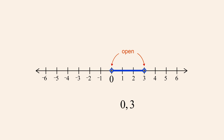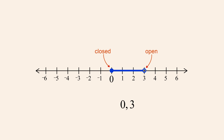Open intervals are written using parentheses. And if the interval is closed on one end and open on the other, then the closed end with the included endpoint is written with a bracket, and the open end with the excluded endpoint is written with parentheses.